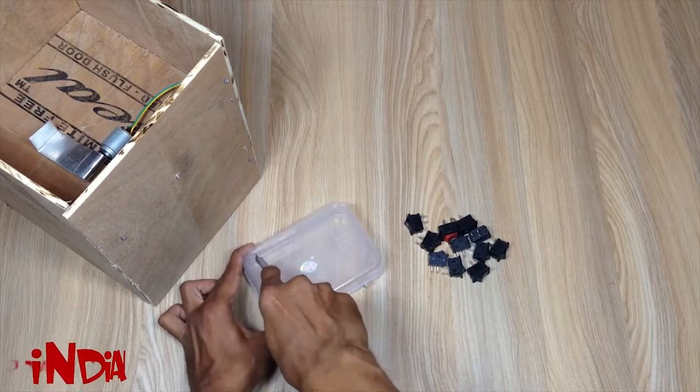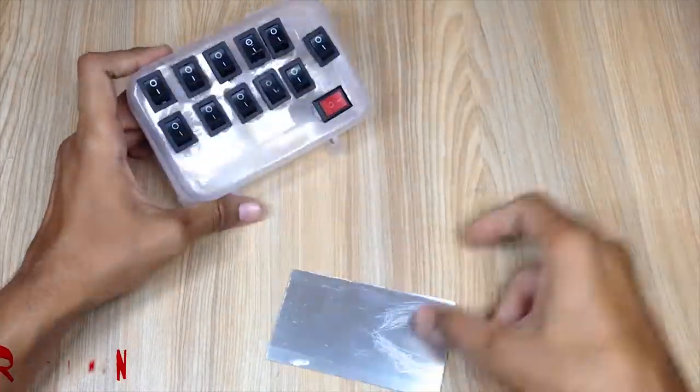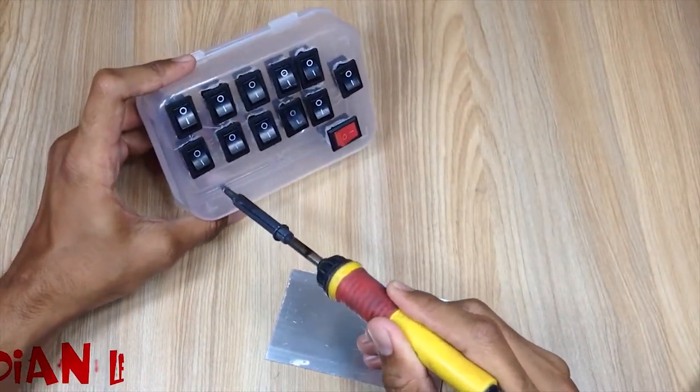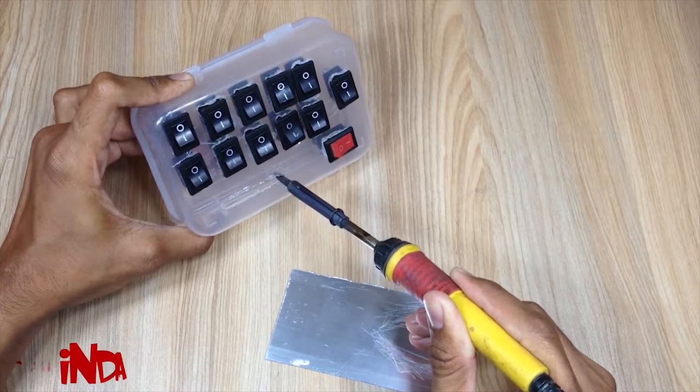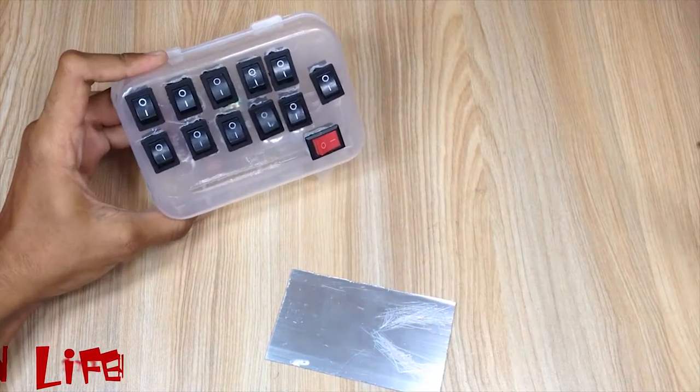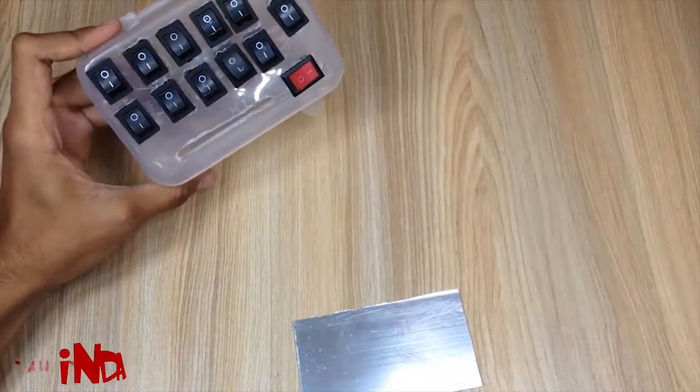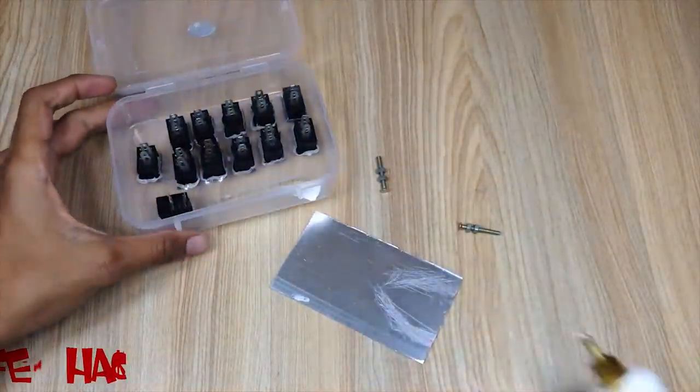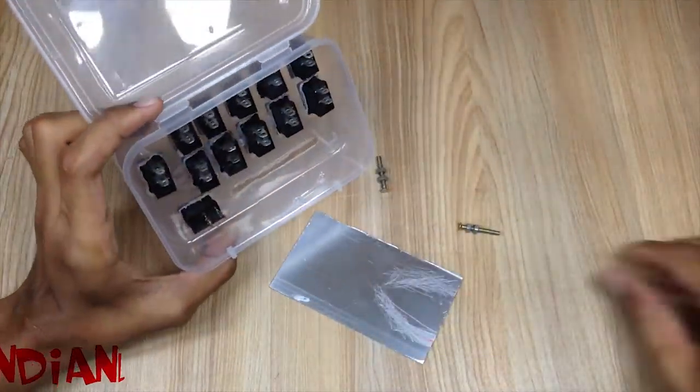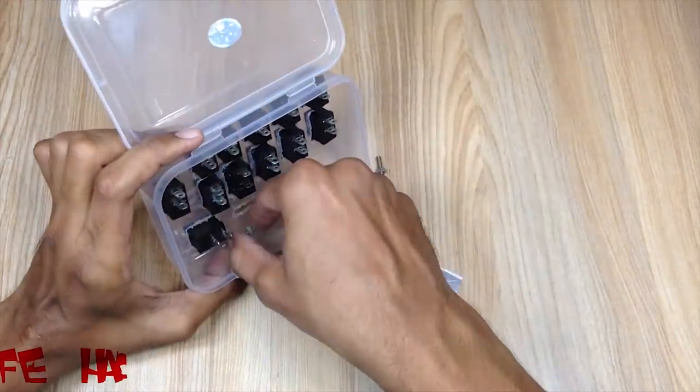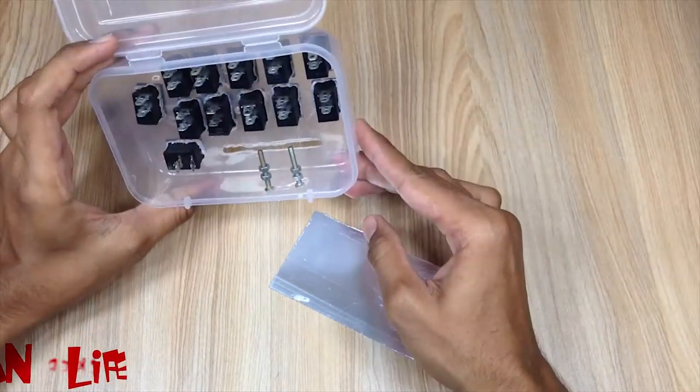Now we are moving to the electronic part. These screws are conductors, so when the card will touch it, the current will pass through the card and unlock the lock.